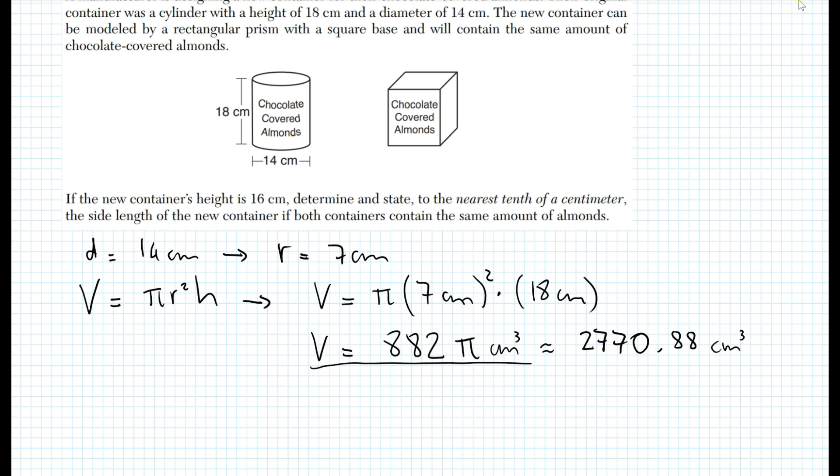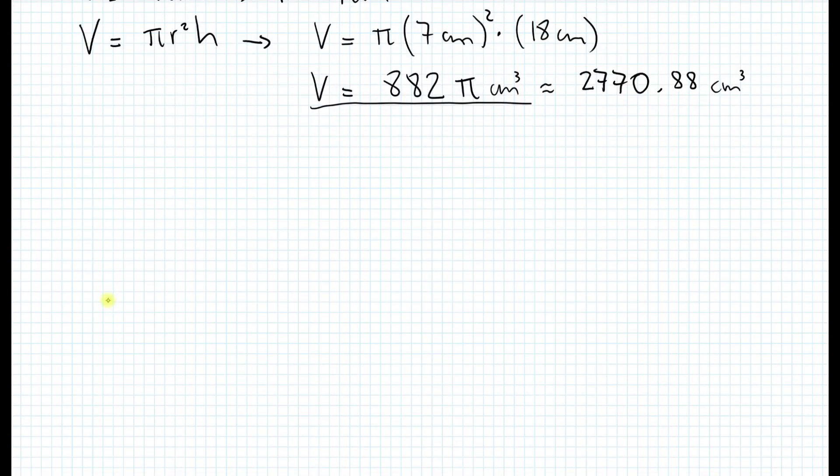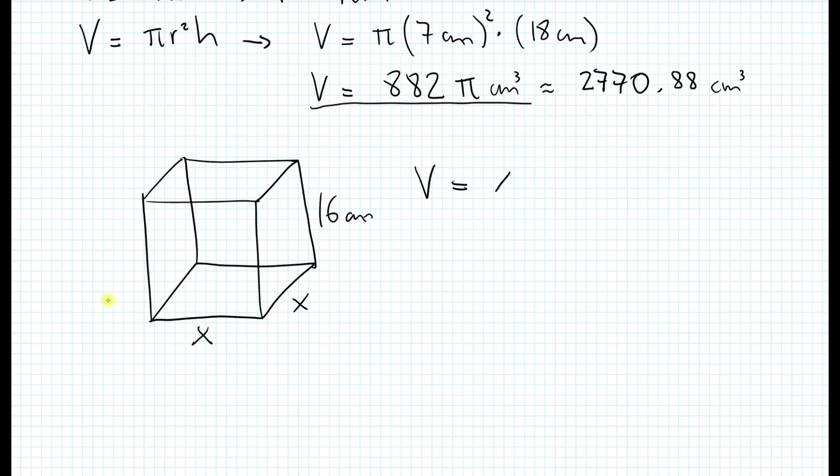So what else can we find here? Well, if you look at the chocolate-covered almonds for the rectangular prism, we can actually find the volume in terms of x. So let me draw it here really quick. So let's imagine we have a square base with this rectangular prism. So we know here that the height is 16 centimeters. However, we don't know what the sides are. So let me call that x because that's what we want to find. So that means that the volume of this square prism is equal to x². So that's the area of the base times 16 centimeters.